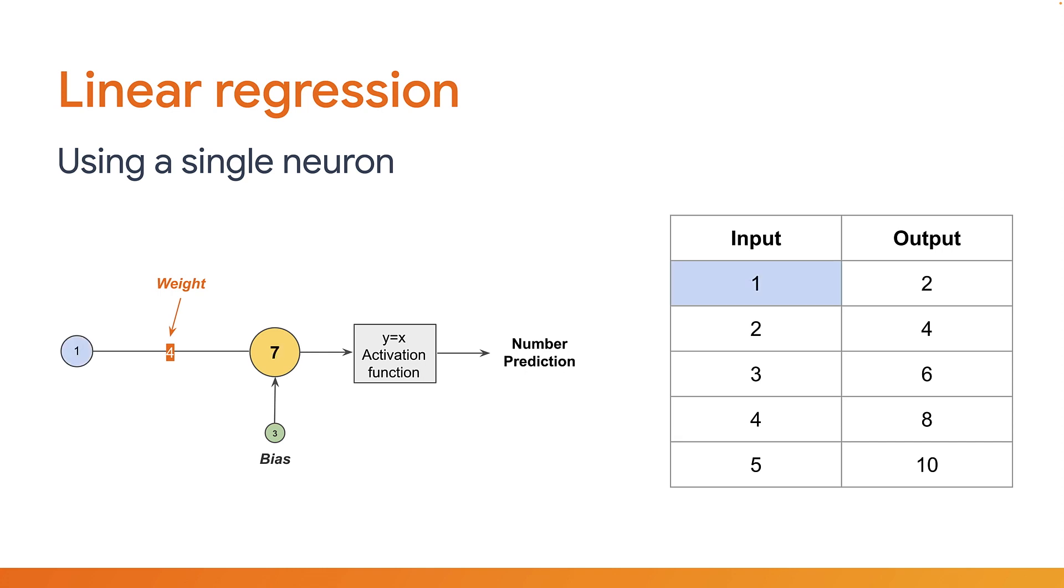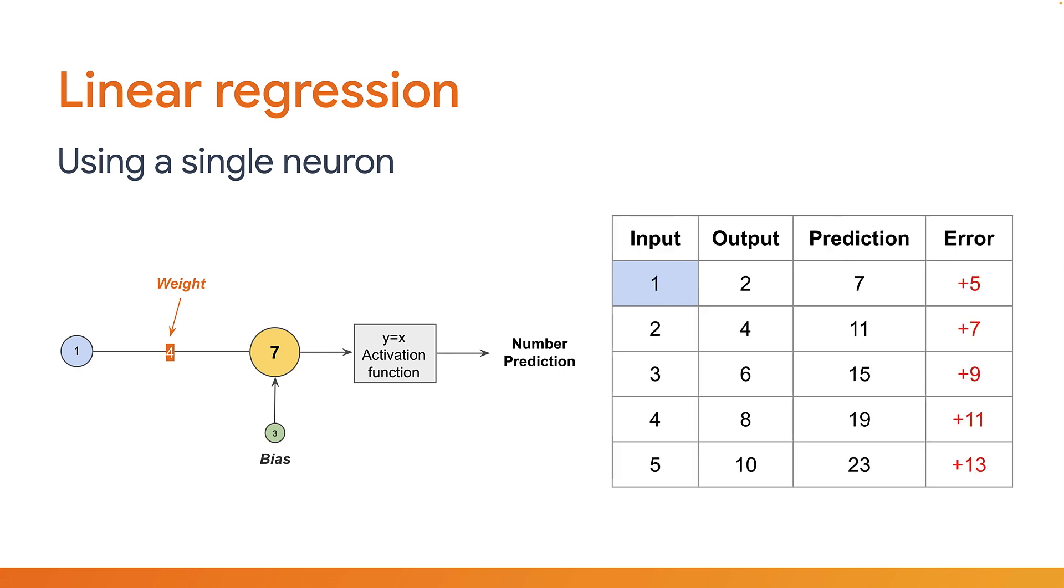Okay, so if you take the first input value, 1, and feed it into this neuron, you can calculate what the output number would be. Here, you multiply by its randomly initialized weight of 4 to produce a value of 4, and then add the bias of 3, the total would be 7. And as this activation function just passes through the number, 7 would also be its prediction for the answer. Repeating this for all the other numbers in the table, you can see how far off it was in each case, known as the error.